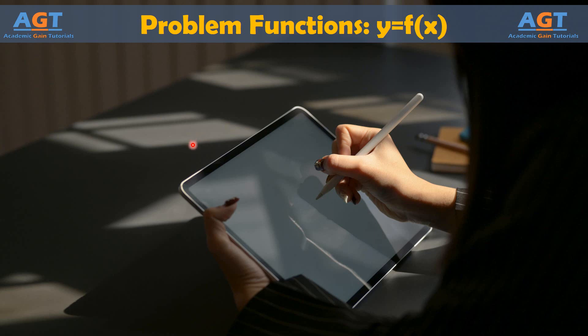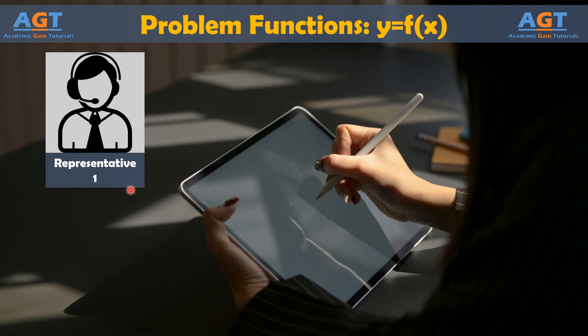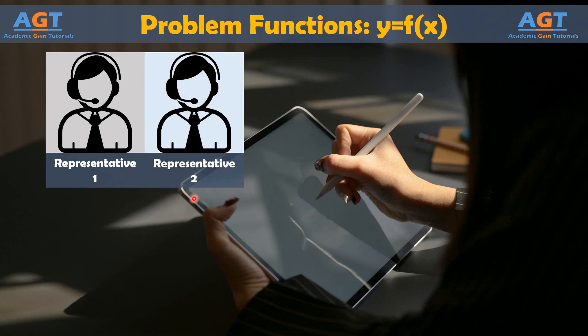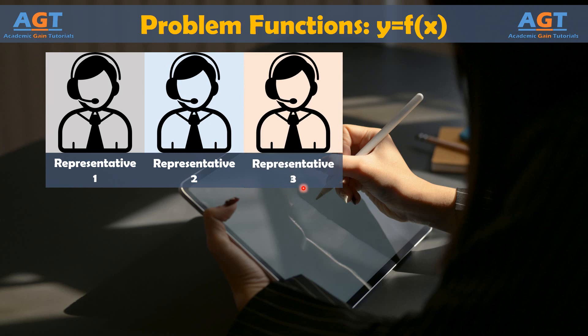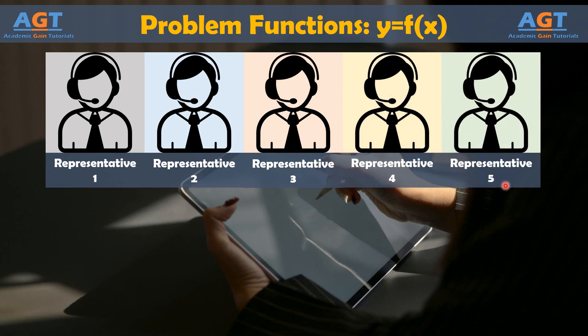To find out what might be causing the situation, the manager researches the problem by talking to the reps, talking to the customers, and going out on random calls with all five representatives. One representative is a native to the area the team services, meaning he or she knows many customers personally, resulting in friendly chatter that lengthens time on the job. One representative provides homeowners with very in-depth explanations about HVAC issues, sometimes beyond what the homeowner needs to know. One representative is new to the job and takes longer because he or she is unsure of the work, has to double-check the work, or calls another rep to ask questions. The remaining two representatives perform work in times that are on par with company averages.